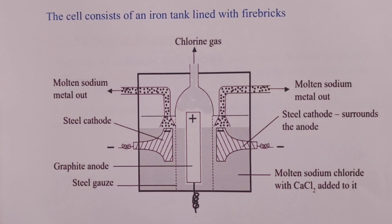The cell consists of an iron tank that has been lined with firebricks. Now inside the cell is filled with molten sodium chloride-calcium chloride mixture, actually in the ratio of 60% sodium chloride to 40% calcium chloride. This mixture acts as our electrolyte.